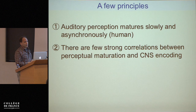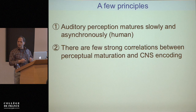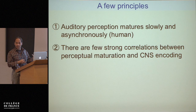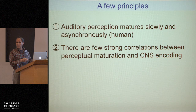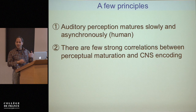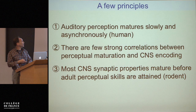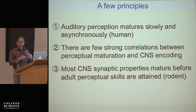Unfortunately, there are very few strong correlations between a specific neural mechanism and any specific percept. We know about a vast number of developmental changes in the nervous system, from molecular changes at the level of receptor molecules to changes in connections. But most of these happen very early in development and precede the development of perception. Most synaptic properties — the real functional bases of computations in the nervous system — mature mostly before auditory perceptual skills are attained.